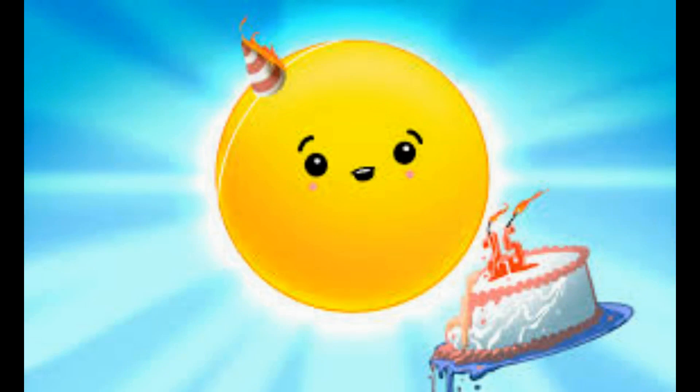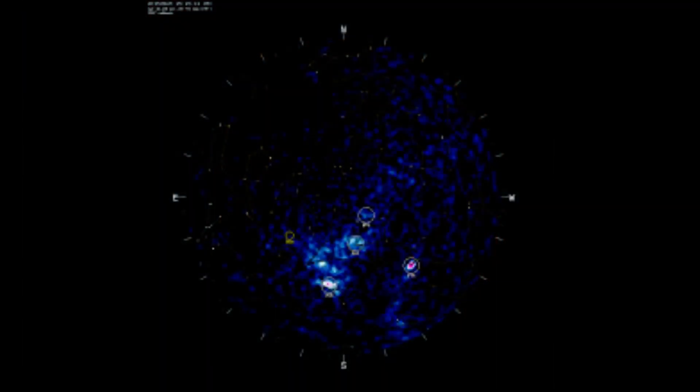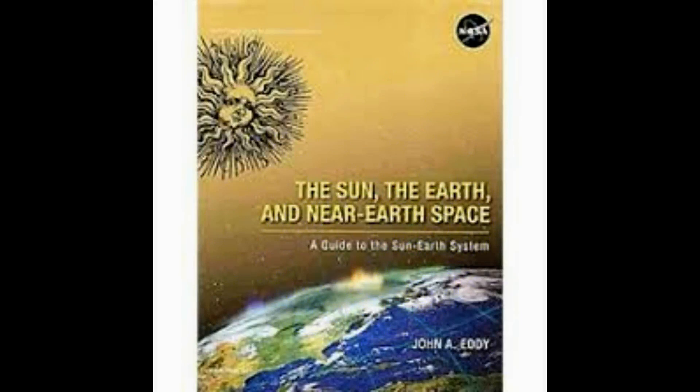Flares and CMEs have different effects at Earth as well. The energy from a flare can disrupt the area of the atmosphere through which radio waves travel, which can lead to temporary blackouts in navigation and communication signals.